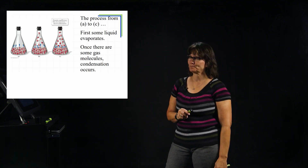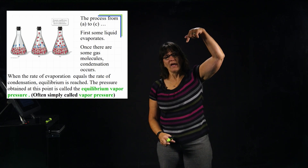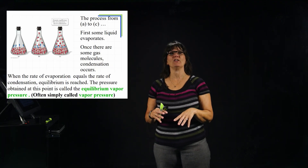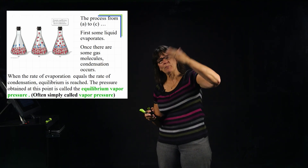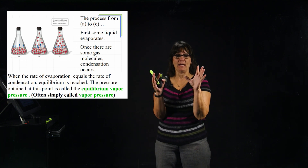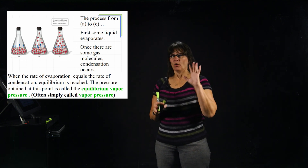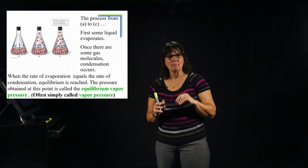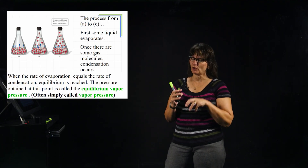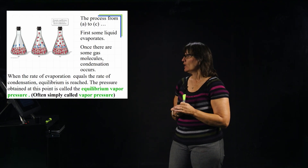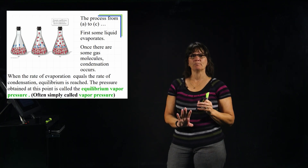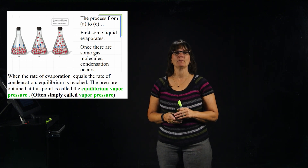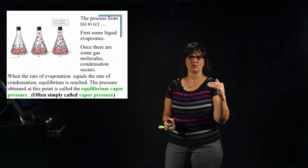There will be some point at which the rate of molecules going into the gas phase and the rate of molecules condensing back to the liquid phase are equal to each other. When that happens, we are at a dynamic equilibrium — no overall change, with a continual exchange of which molecules are in the liquid versus the gas phase. This state is called the equilibrium vapor pressure, or simply vapor pressure.